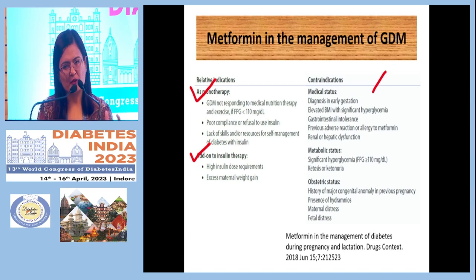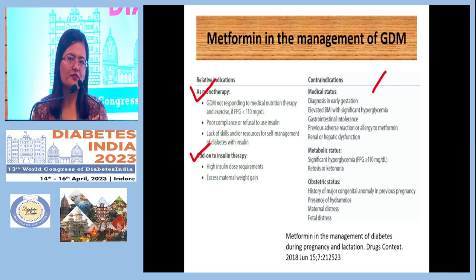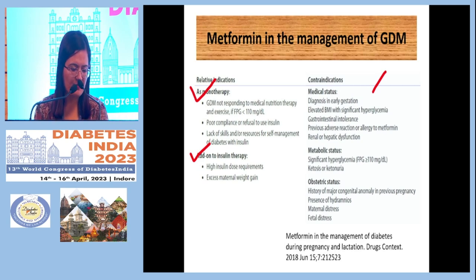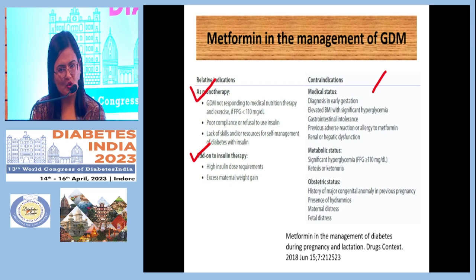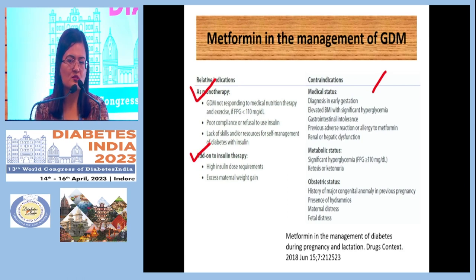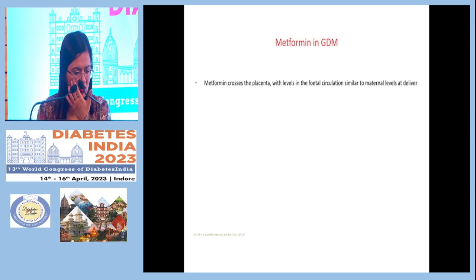Avoid metformin in early gestation (first trimester), if the patient has gastrointestinal issues, allergy to metformin, renal or hepatic compromise, fasting glucose more than 110, history of major congenital anomalies in prior pregnancy, history of polyhydramnios, or maternal/fetal distress. These are relative contraindications and should be discussed with the patient.